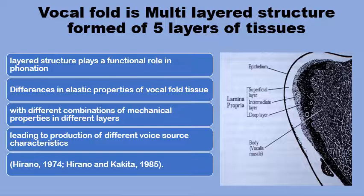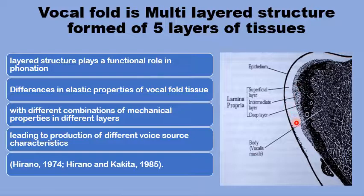The vocal fold stiffness refers to the sum total of the elastic mechanical properties of the five layers of the vocal fold, because the vocal fold is not a homogenous structure. It's multi-layered, formed of five different layers with different elastic properties, including muscle, the vocalis thyroarytenoidus, the collagen fibers in the deeper part of the lamina propria, the collagen and elastic fibers in the intermediate layers, some elastic fibers and extracellular material in ring space, and of course the envelope, the epithelial cover of the vocal folds. The different mechanical properties provide numerous possibilities of different combinations of elastic properties, leading to different voice source characteristics.